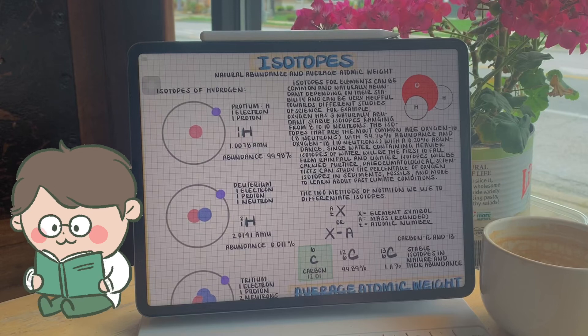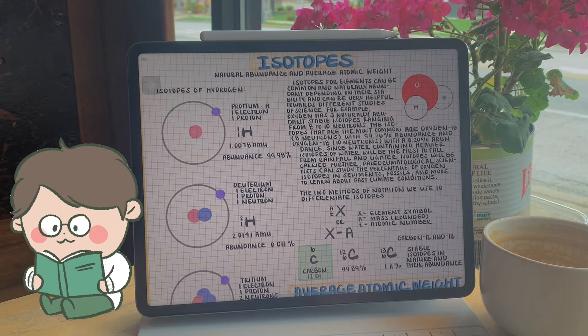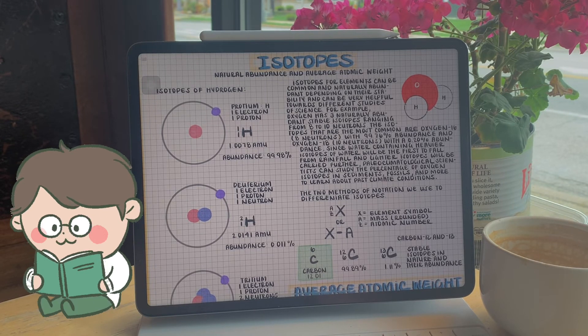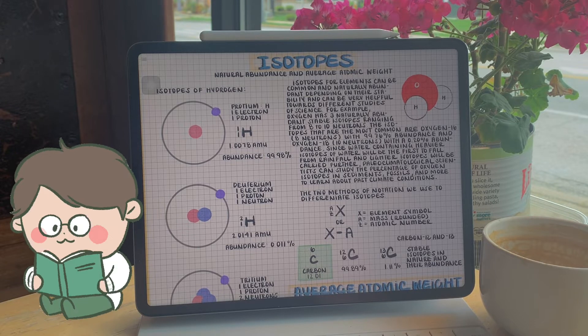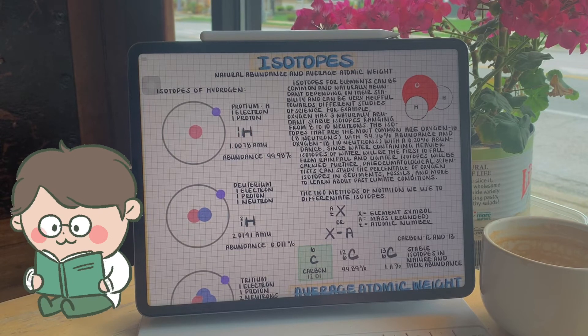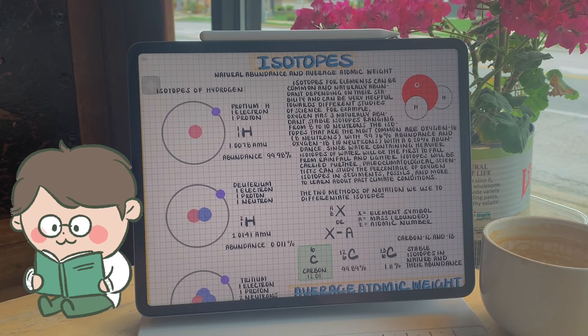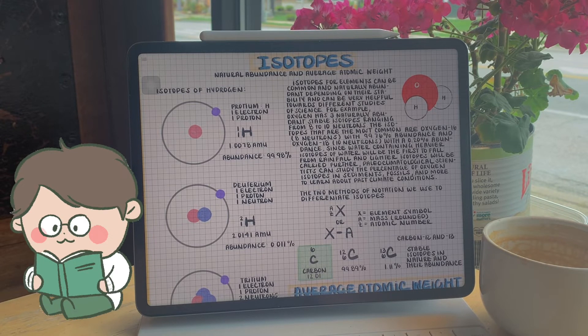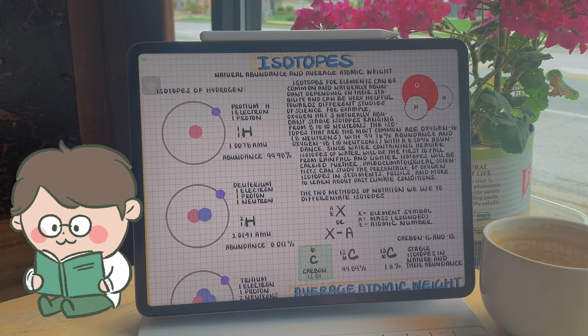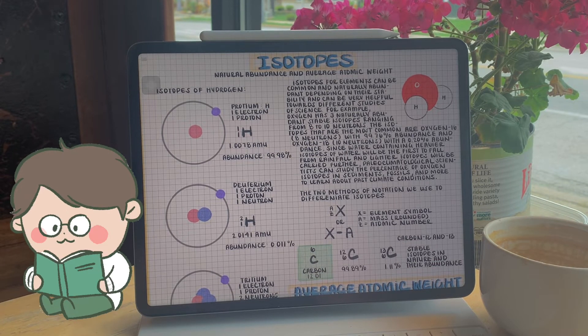Isotopes for elements can be common and naturally abundant depending on their stability and can be very helpful for different studies of science. For example, oxygen has three naturally abundant, stable isotopes, ranging from 8 to 10 neutrons.